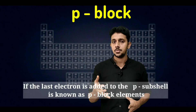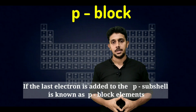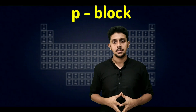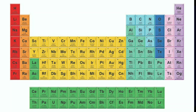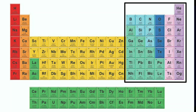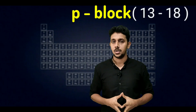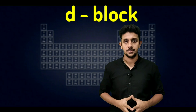In the periodic table, groups 13 to 18 are called p-block elements because their last electron is added to the p sub-shell. Now let's move to the next block: d-block elements.